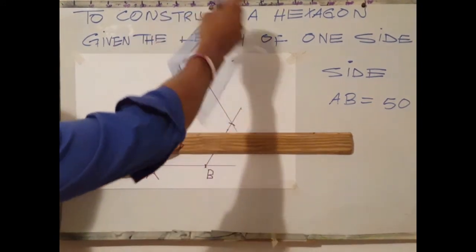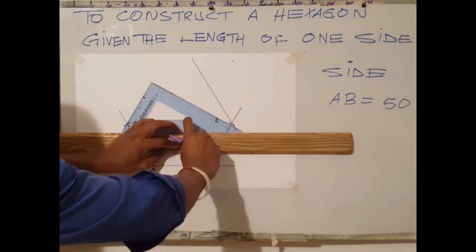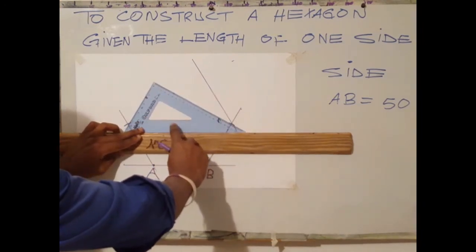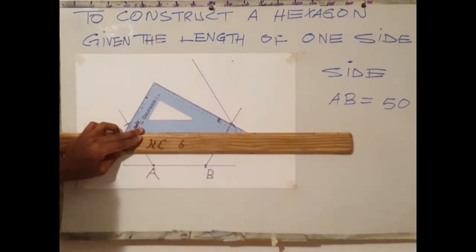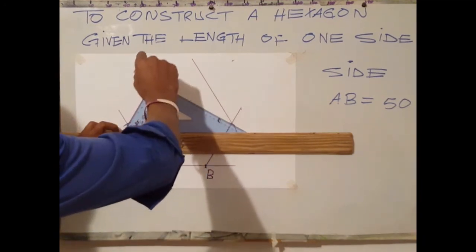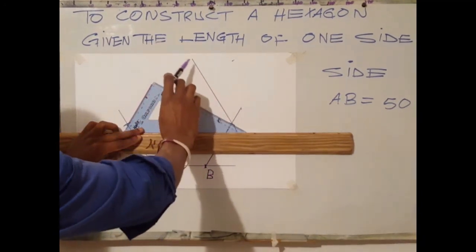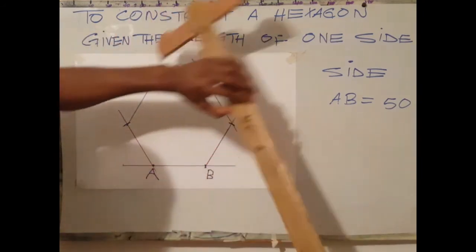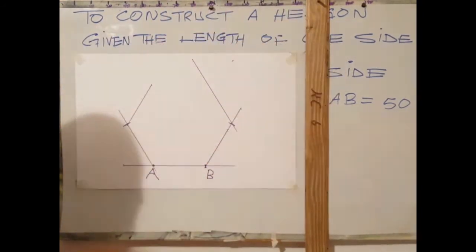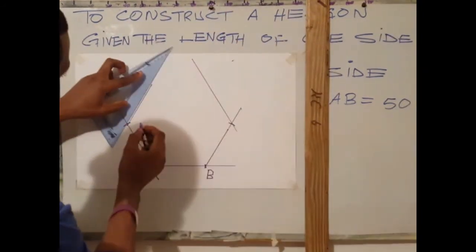Then rotate my set square. Please note this is a 60 degree angle that we are to use. This can only be done using the 60-30 set square. Then I extend this side a bit.